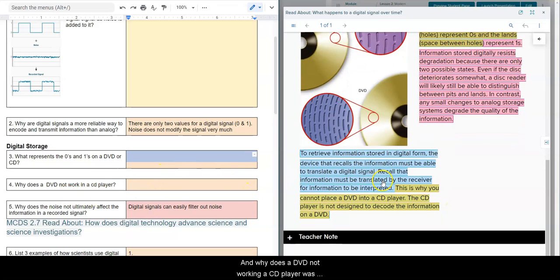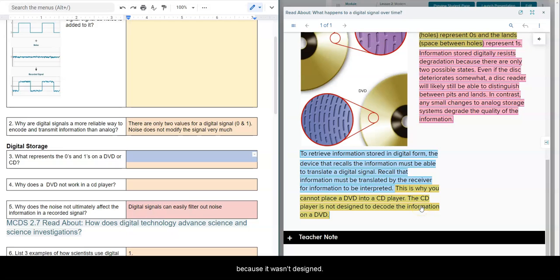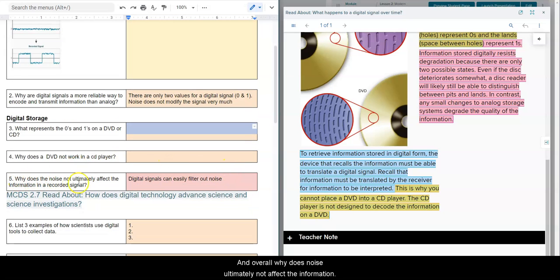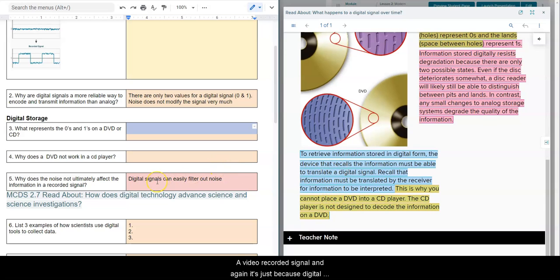And why does a DVD not work in a CD player? Well, it's because it wasn't designed to decode that type of information. And that answer is just right there. And overall, why does noise ultimately not affect the information of a recorded signal? And again, it's just because digital signals can easily filter out the noise. And this is true for your phone. That's why you're able to easily understand somebody on a cell phone, because it will isolate your voice and reduce the amount of background noise.